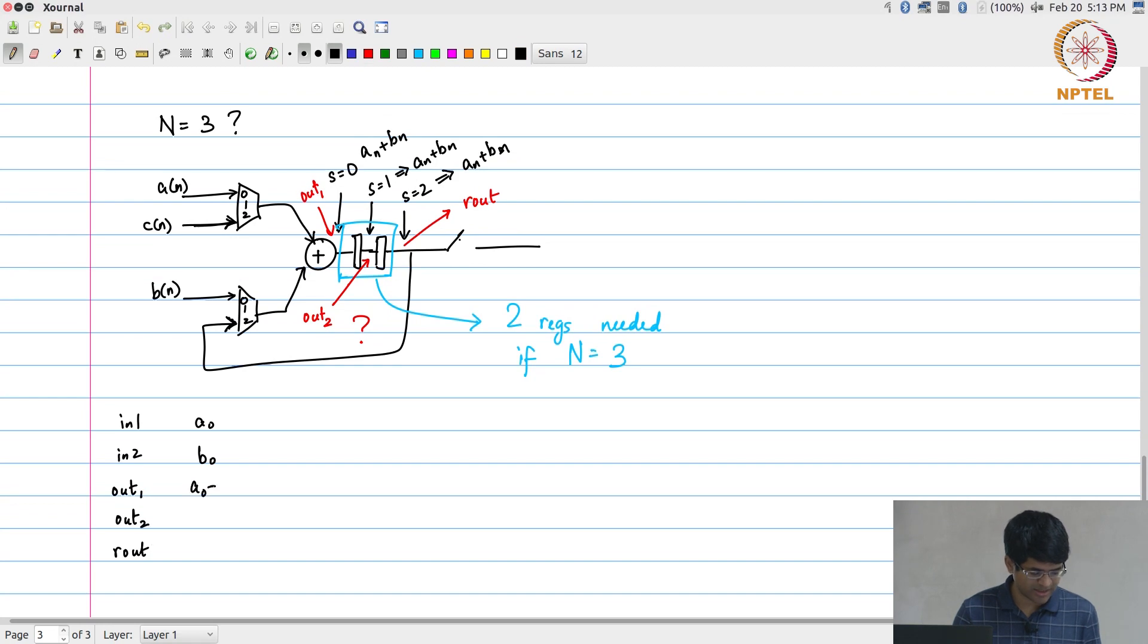So, out 1 will be a 0 plus b 0 which at time 1 will come here to out 2, and at time 2 will come here and in turn will sit here. As long as I give c 0 over here, this will in turn lead to this becoming a 0 plus b 0 plus c 0.